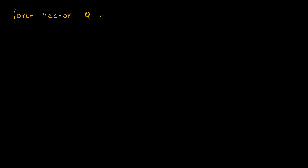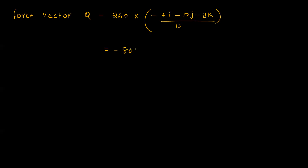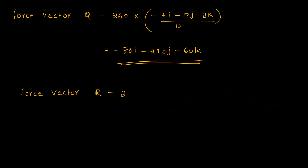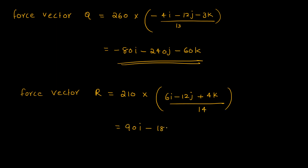Force Q equals its magnitude 260 into the unit vector, which is minus 4i minus 12j minus 3k divided by 30, giving approximately minus 80i minus 240j minus 60k. Force R equals its magnitude 210 into the unit vector of AD, which is 6i minus 12j plus 4k divided by 40, giving minus 180j plus 60k.